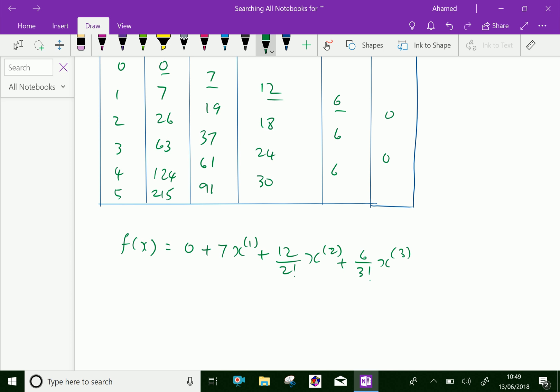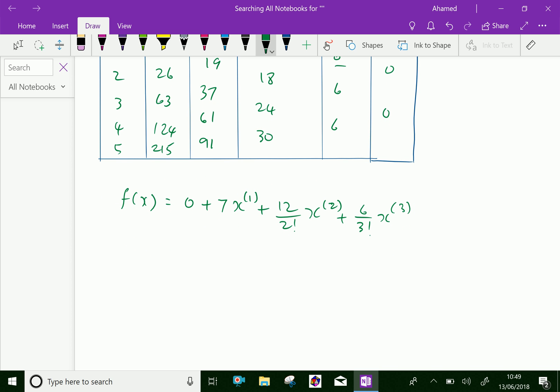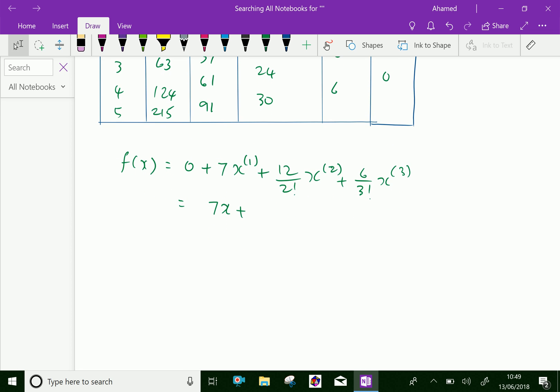Now higher orders are neglected. Which is equal 0 plus 7x plus 12 by 2 factorial, 12 by 2 factorial is 6, x into x minus 1. Next, 6 by 3 factorial is 1, so which is 1 into x into x minus 1 into x minus 2.